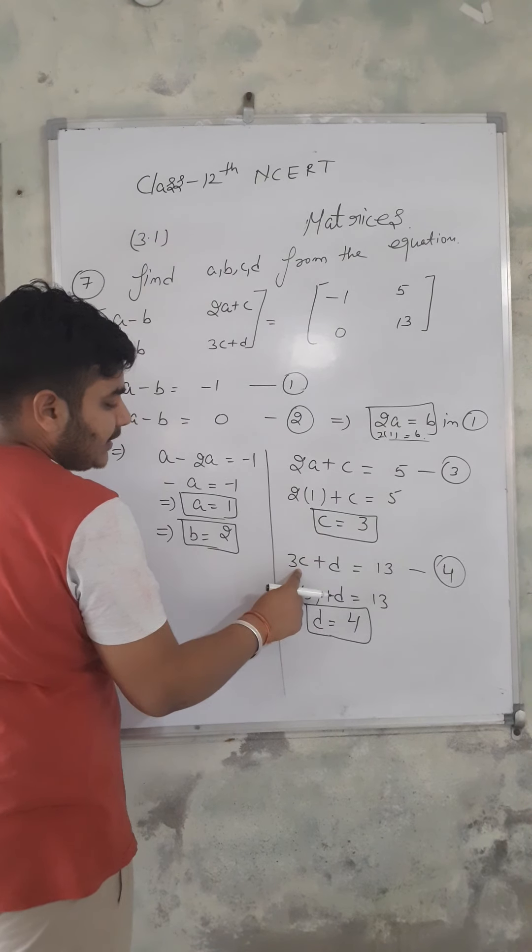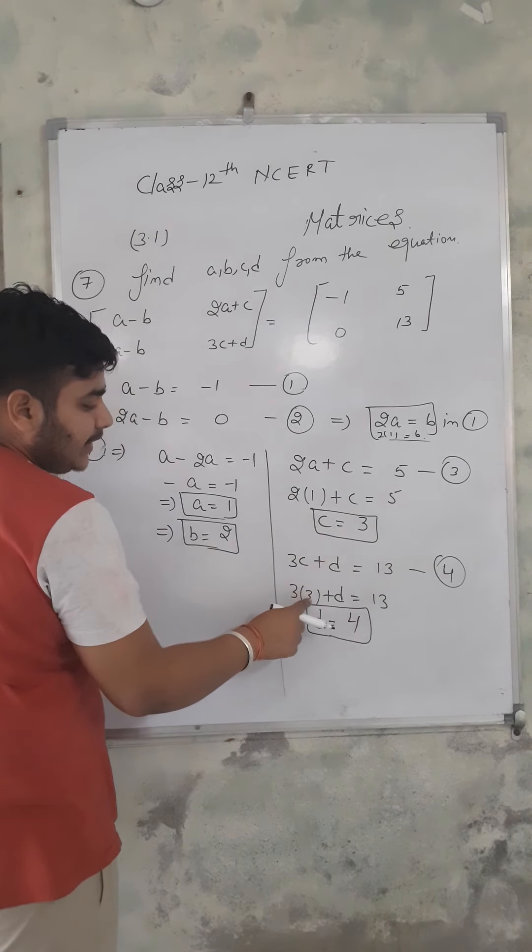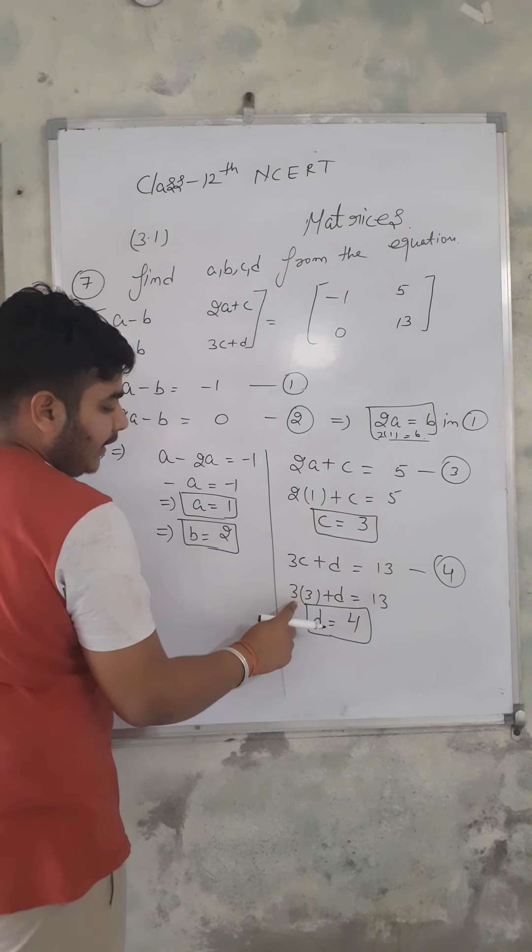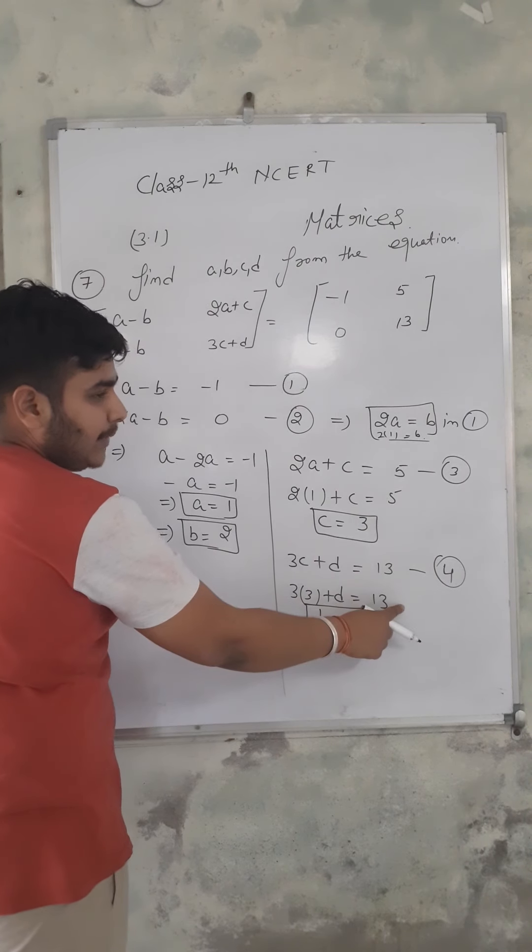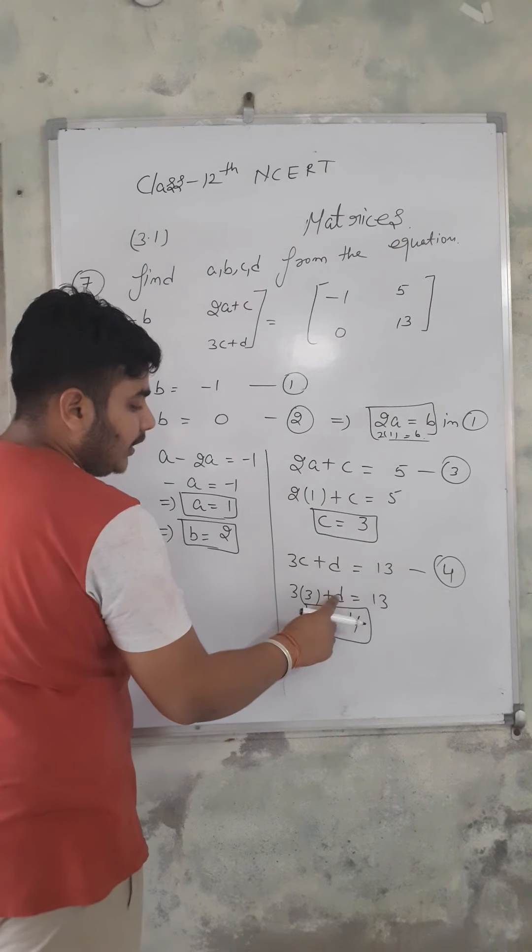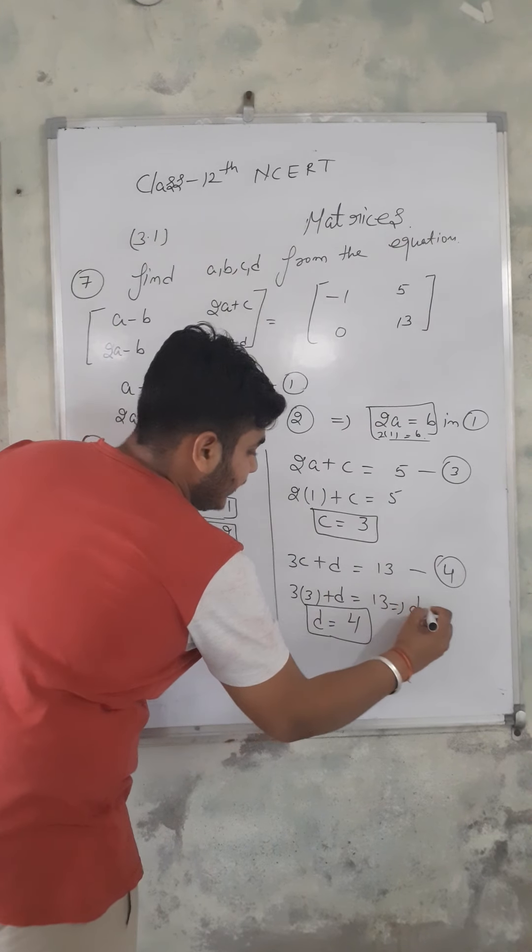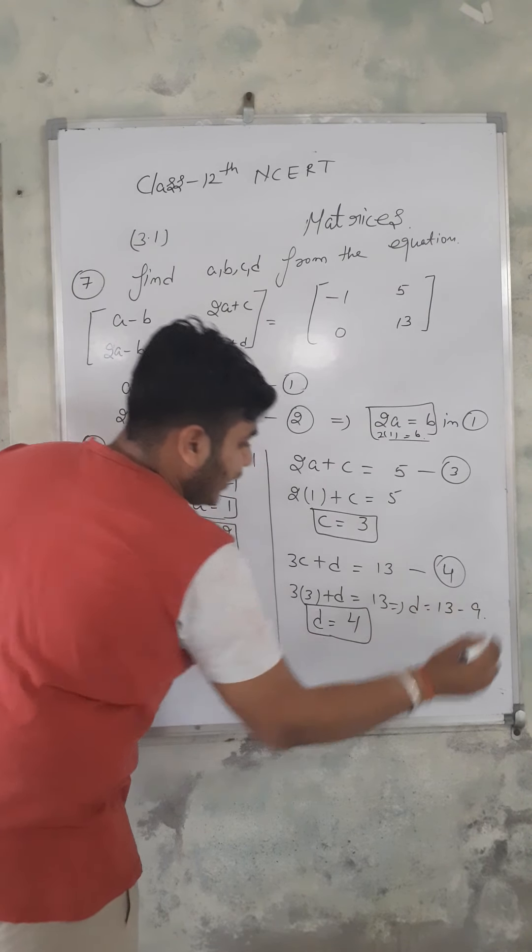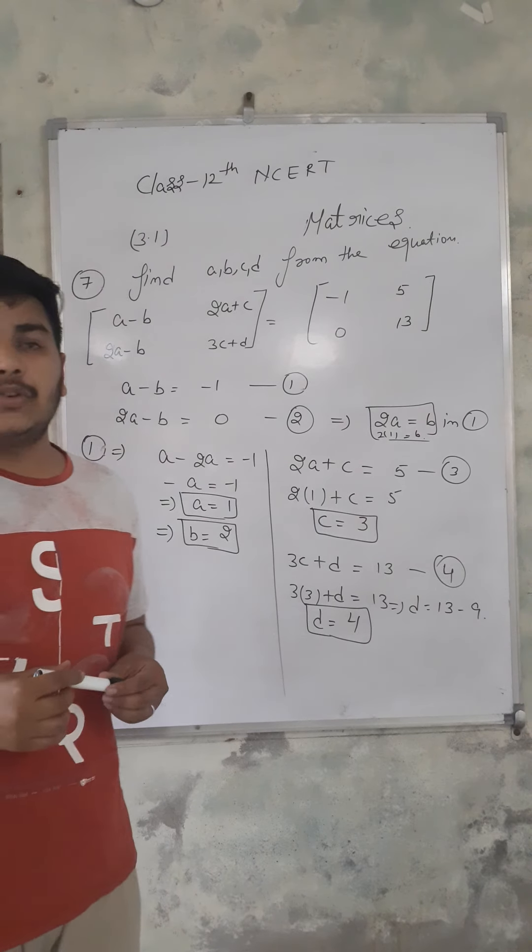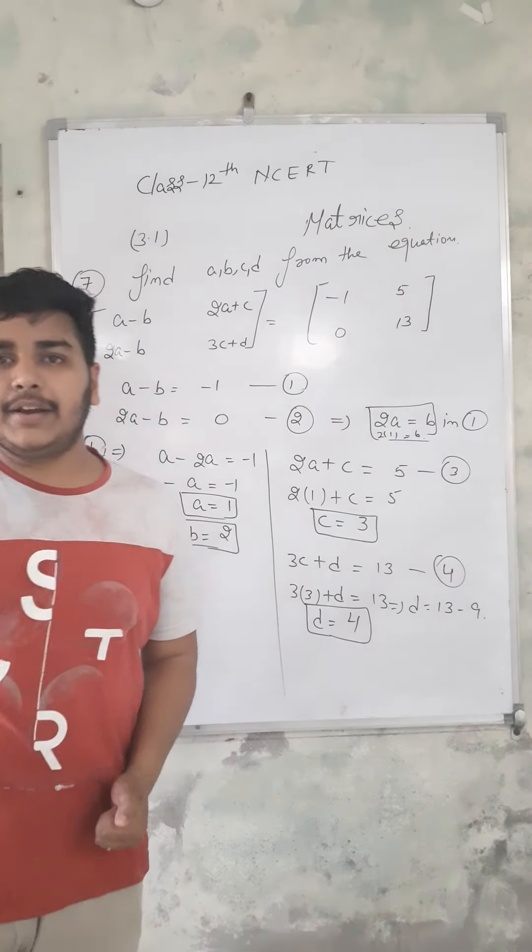The fourth equation is 3c plus d equals 13. Since c equals 3, we have 3 times 3 equals 9. So d equals 13 minus 9, which equals 4. Question 7 is now completed.